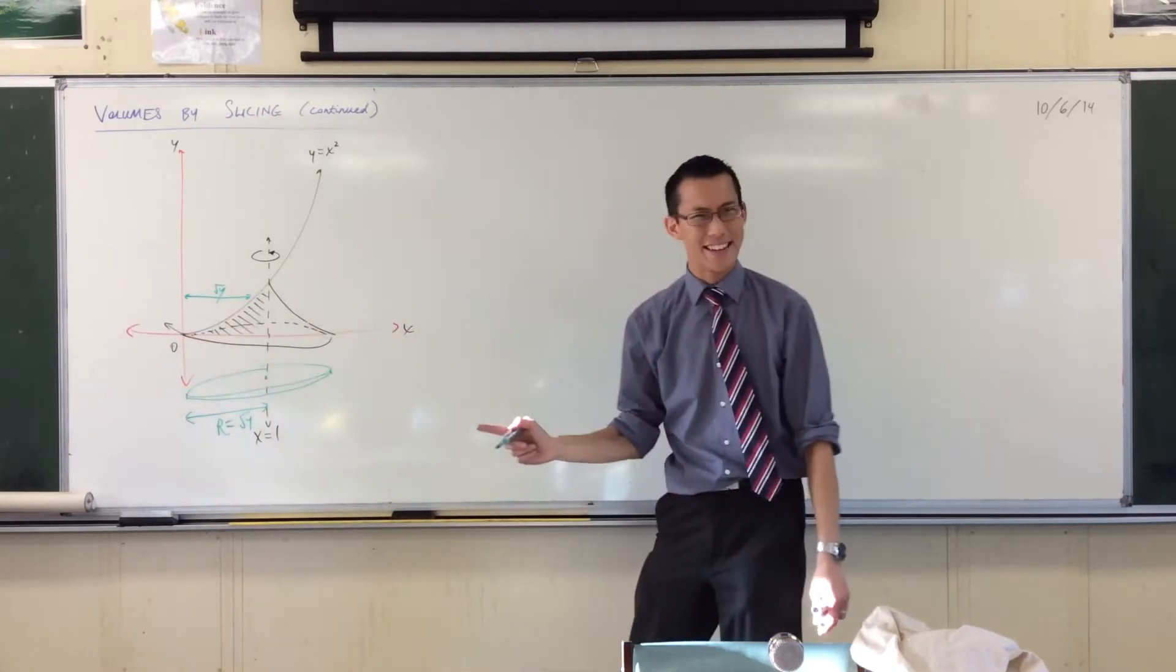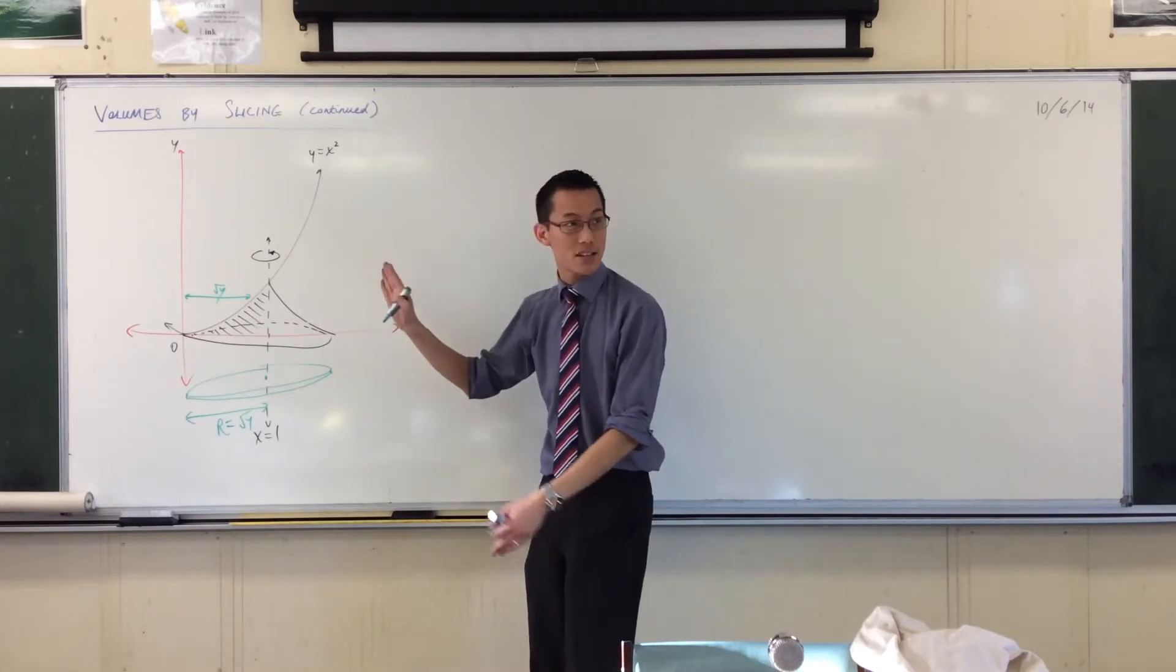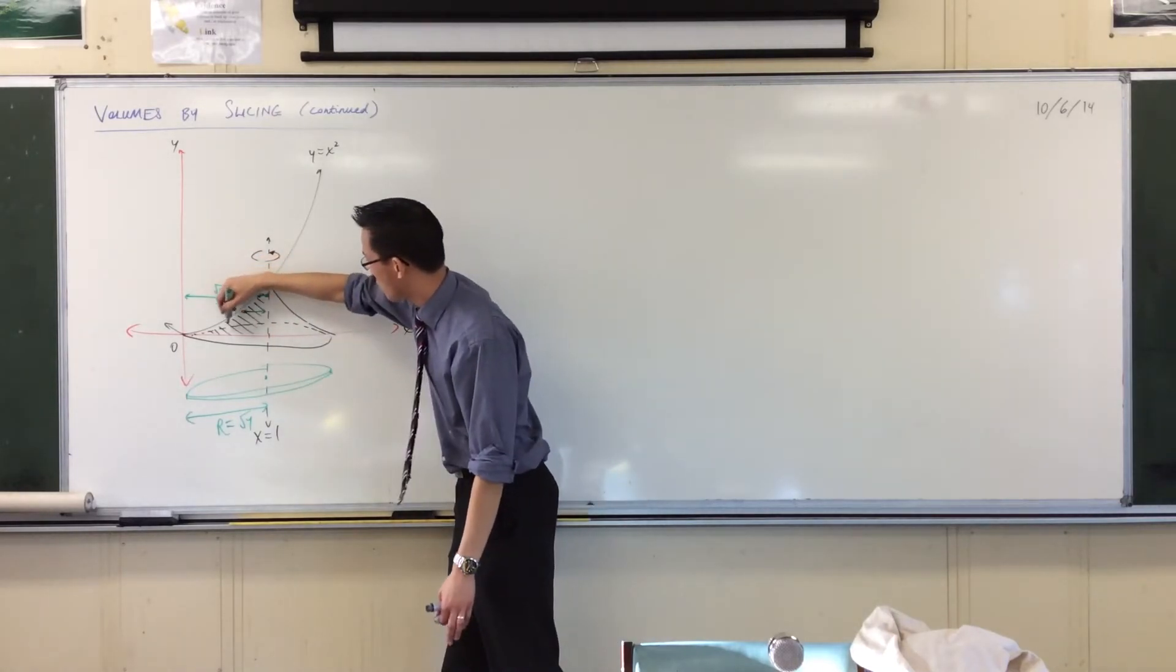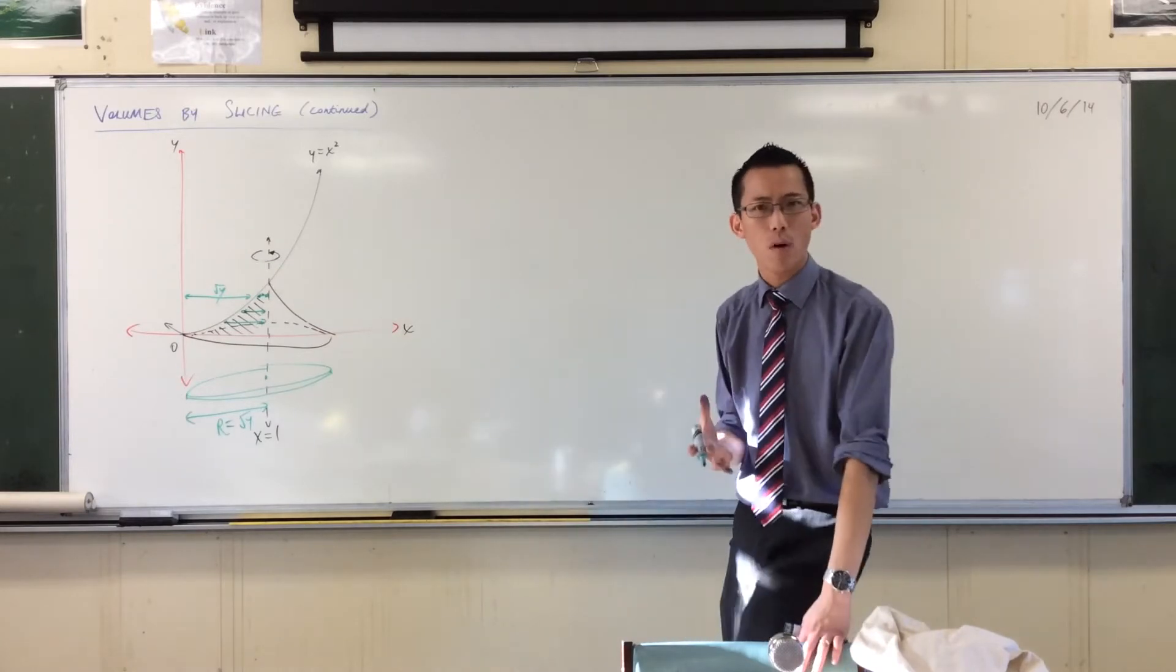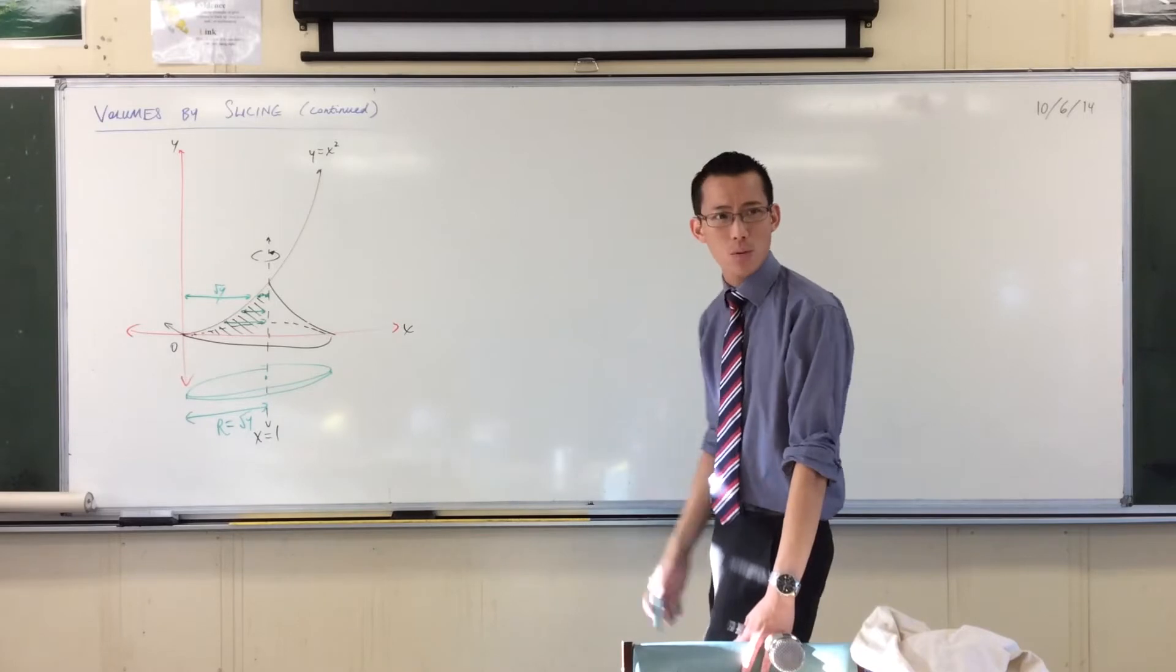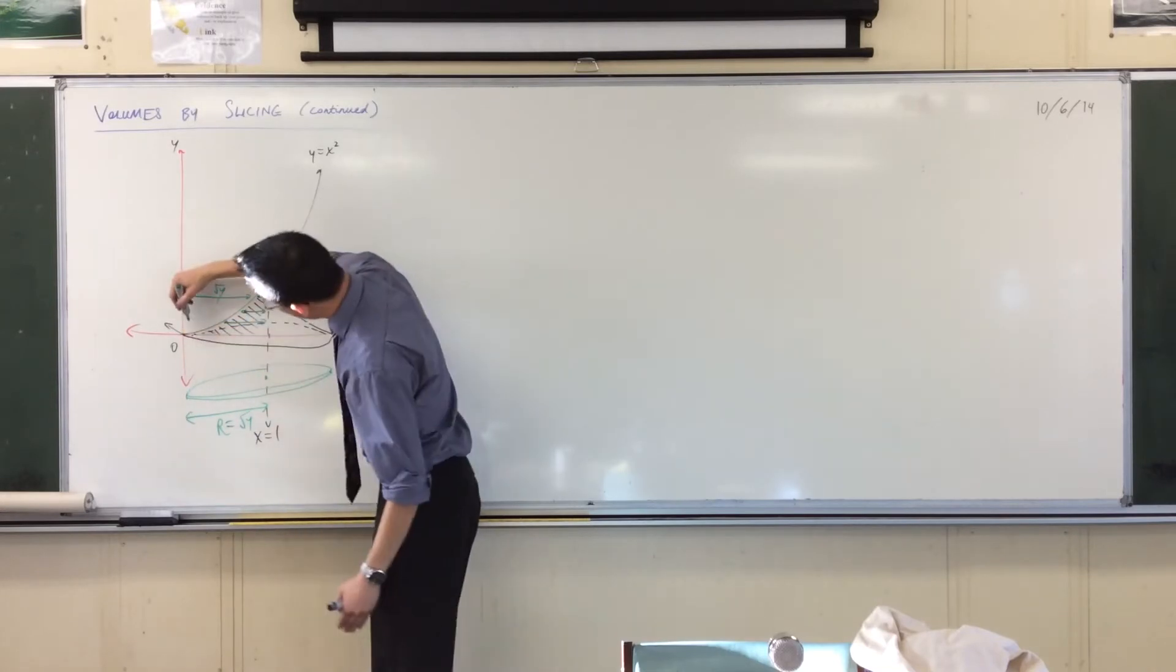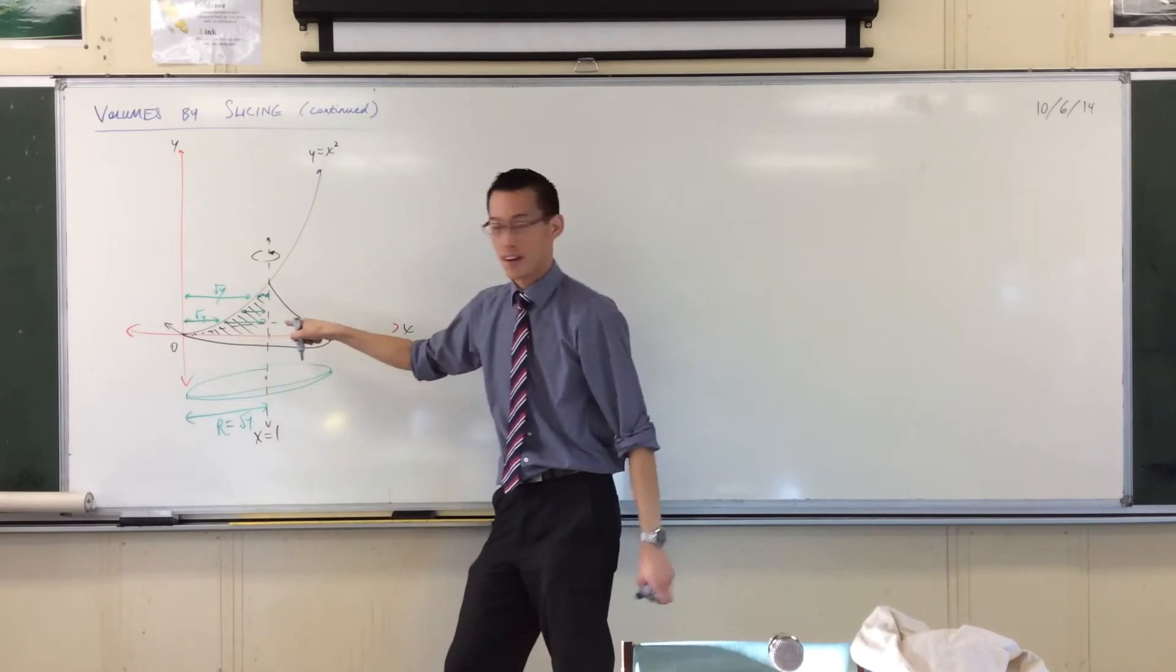But we don't want that distance. That's not the area that's being rotated. What is the area? It's the part to the right, isn't it? Well, I guess it would be something like that, okay? That's the radius, or that's the radius, or that. You get the idea, okay? So if it's not the square root of y, what is it? It's one minus, isn't it? Because that whole distance there, if that's x equals one, that whole distance is one, right? So if this distance here is the square root of y, then I want to take the difference, okay?